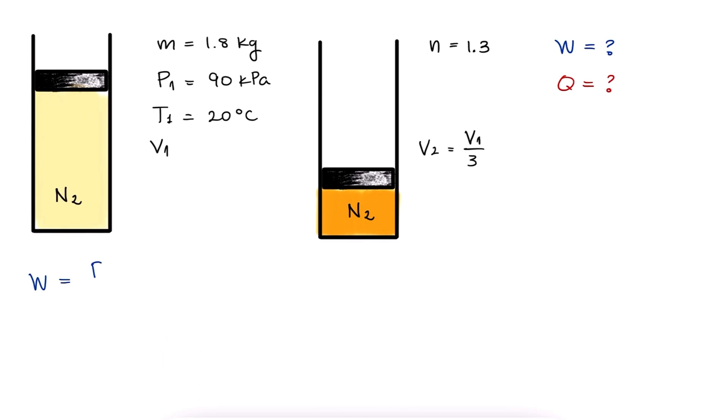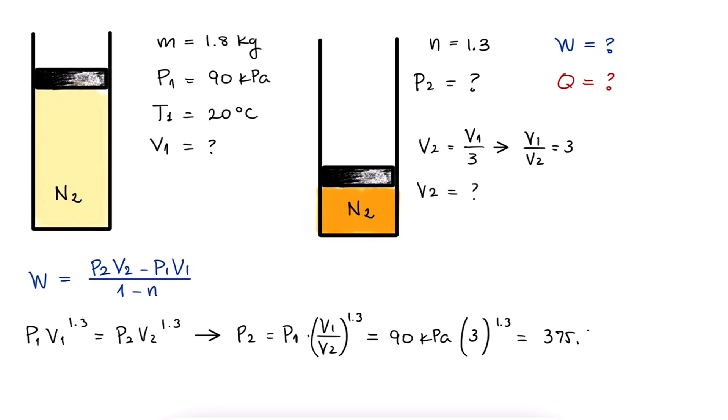Using the expression we derived in the main lecture video, we see that we need the volumes and P2. The pressure at 2 can be easily found because if we know that PV to the 1.3 is constant, we can solve for P2 and use the ratio between V1 and V2, knowing that the volume was reduced to one-third, to substitute all values and find that P2 is 375 kilopascals.